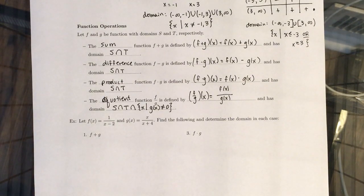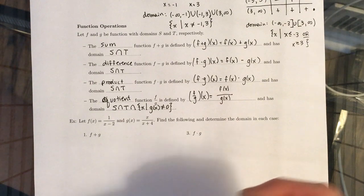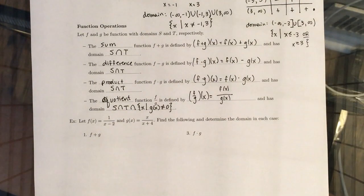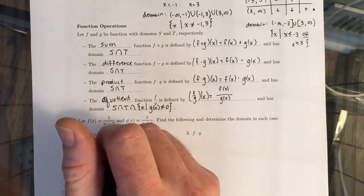Last example of section 2.1. We're given two functions: f which equals 1 over x minus 2, and g which is x over x plus 4. We want to find the sum, difference, product, quotient, and then determine the domain in each case. Once we find the domain for the sum, it'll be the domain for the difference and the product.